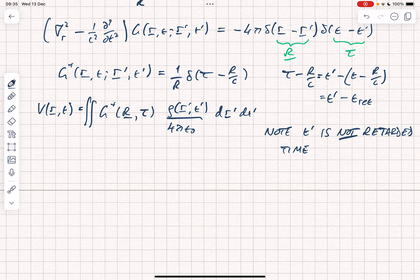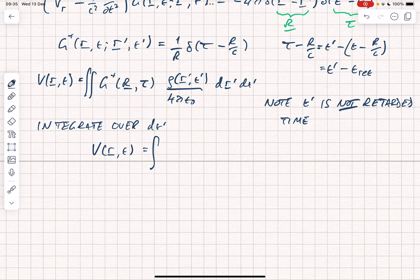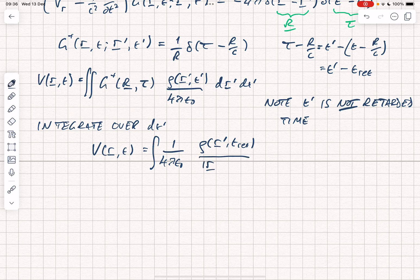However, when we do the integral over time, we integrate over dt prime. We find v of r and t equals the integral of 1 over 4 pi epsilon naught rho of r prime comma t ret. That comes from the form of this delta function, which acts with the Green's function on the time in the integral, divided by r minus r prime dr prime.